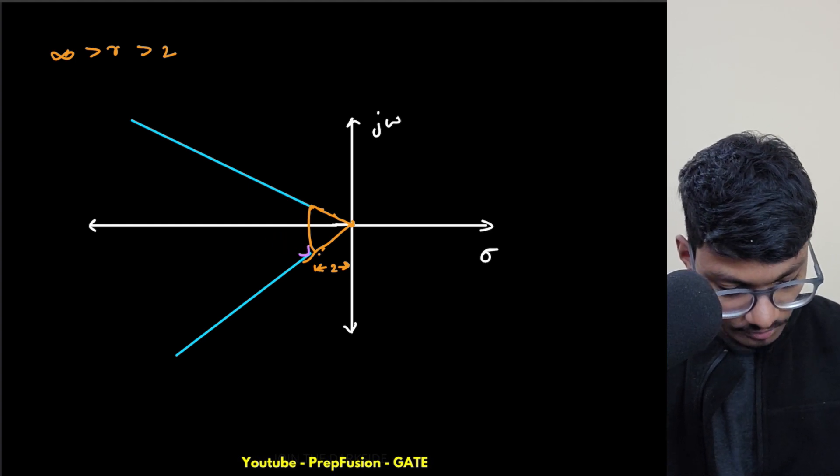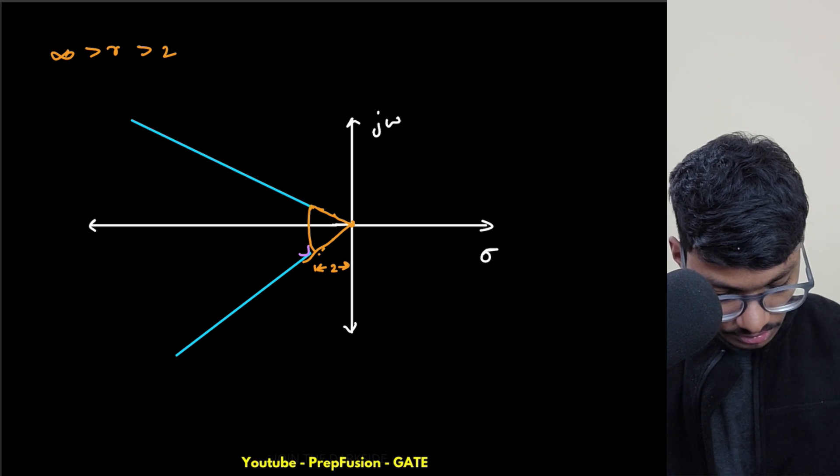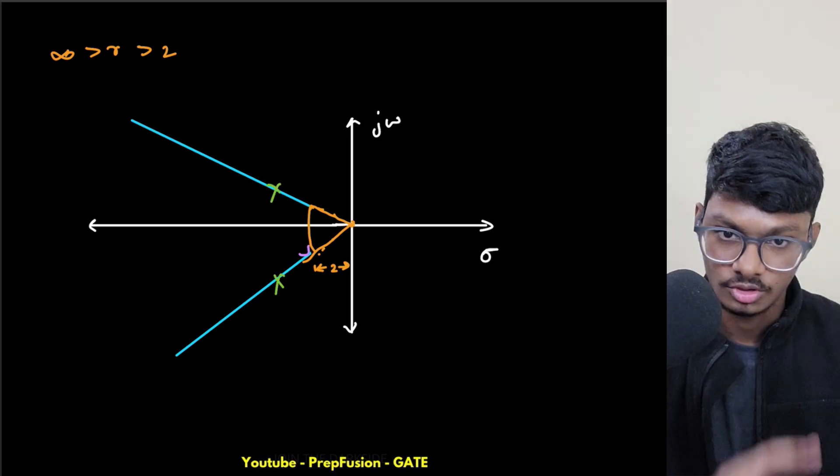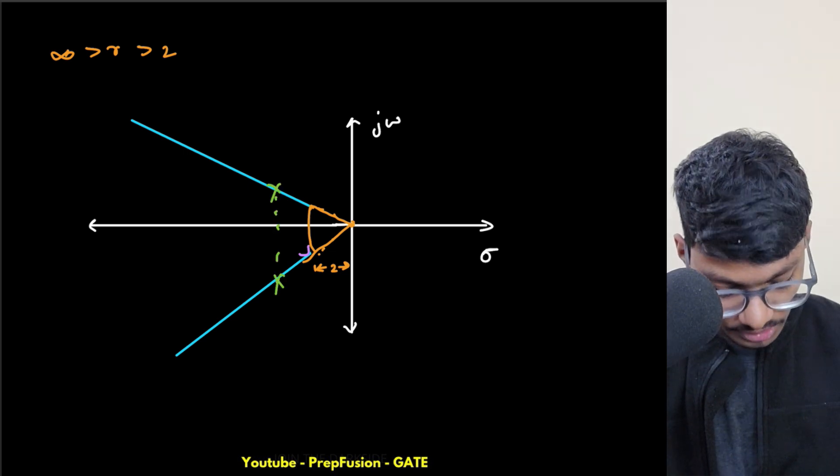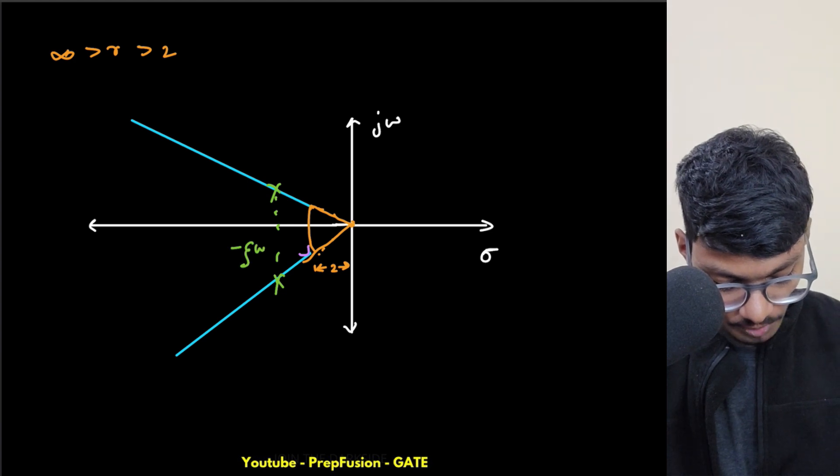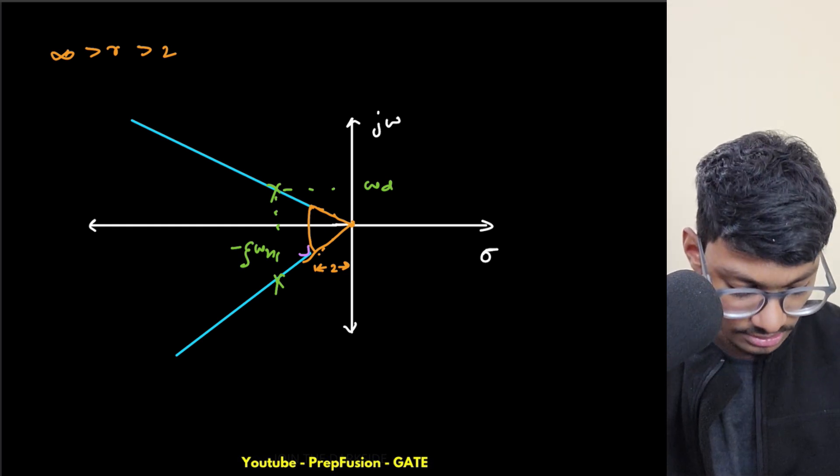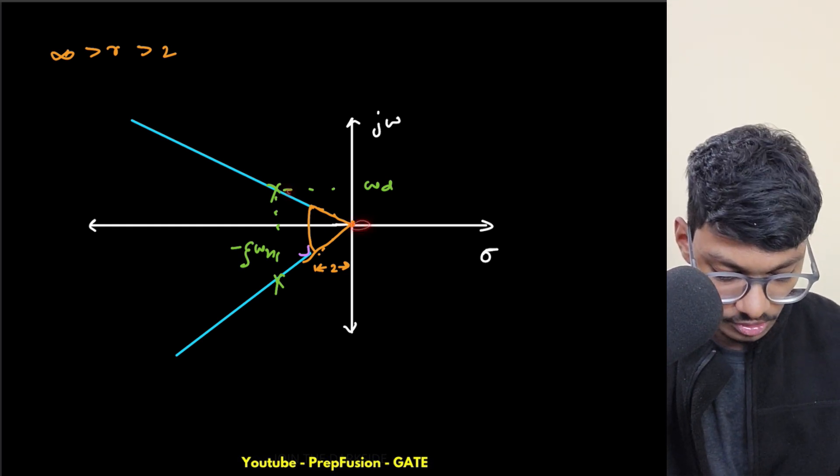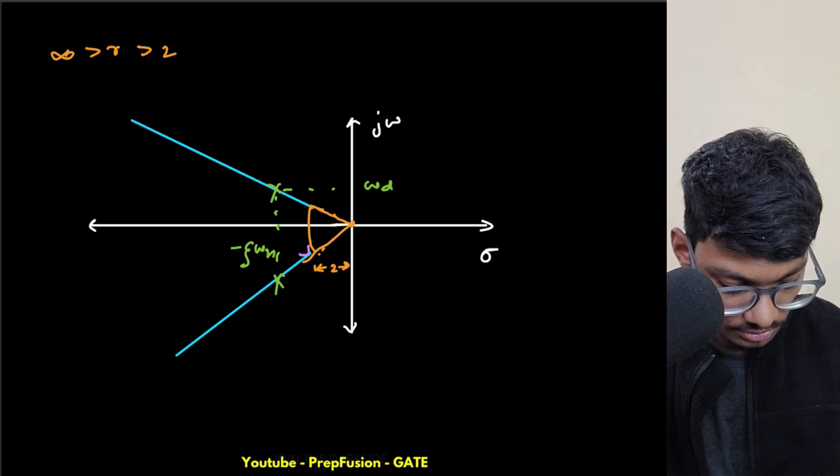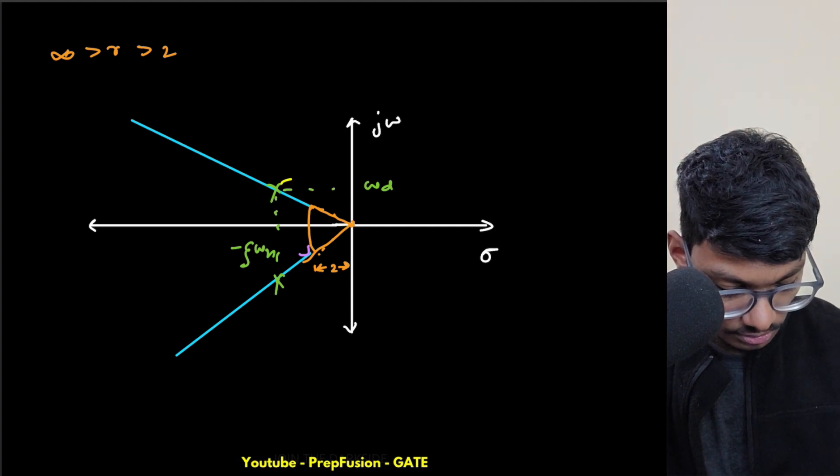So if I just remove this for a second and break this down into two components, let's say I am lying in these two locations - complex conjugate poles. So the real part will be zeta omega n and the imaginary part will be omega d.